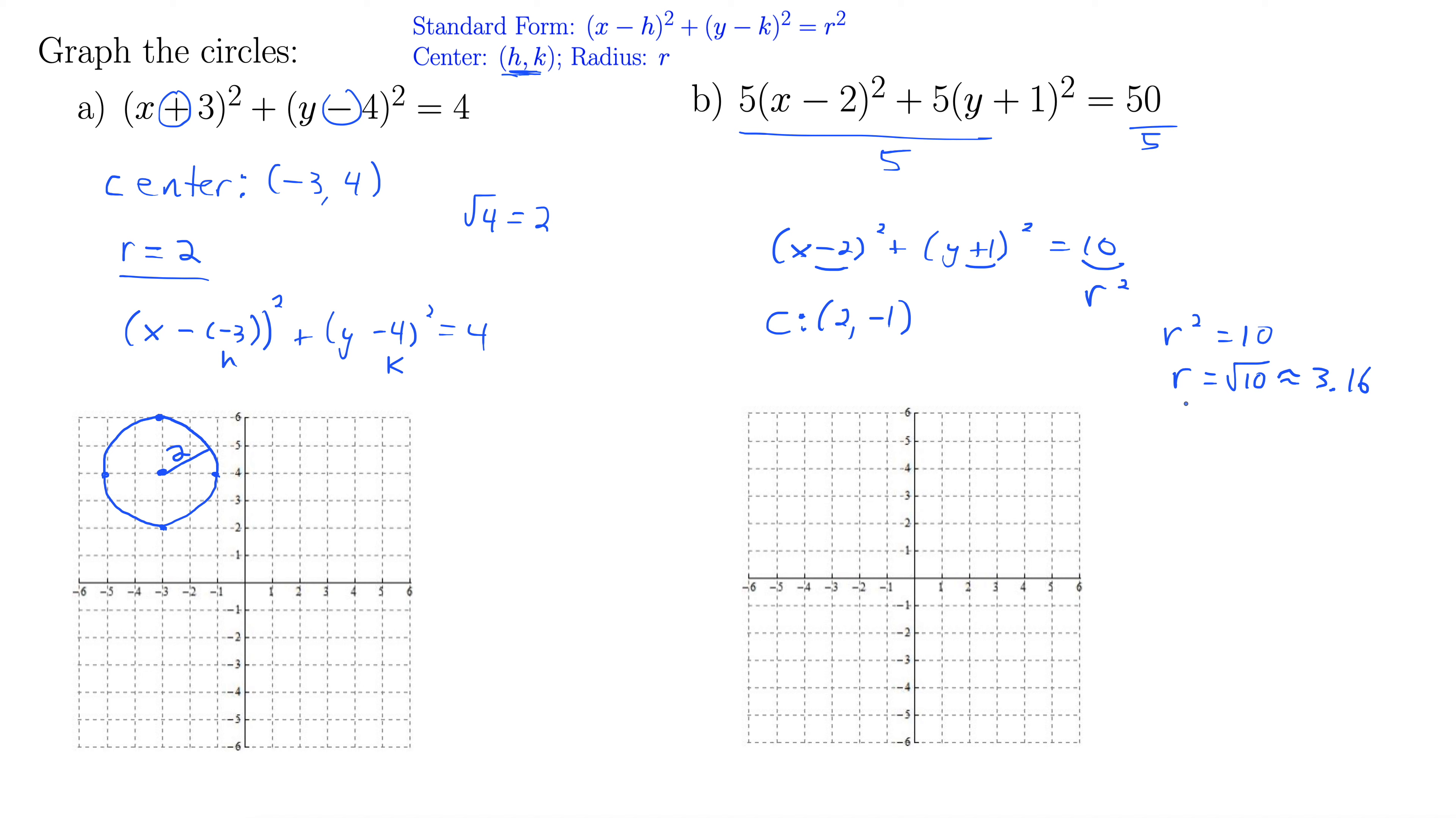Close enough. So let's do our center. We have 2 to the right and down 1. There's our center. And then we'll go about 3.16 to the right. So there's 3, so a little bit above 3.